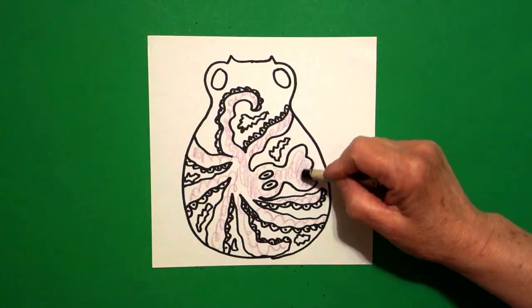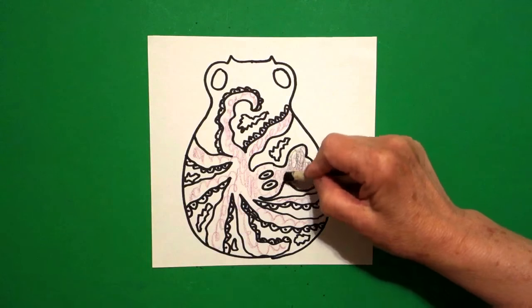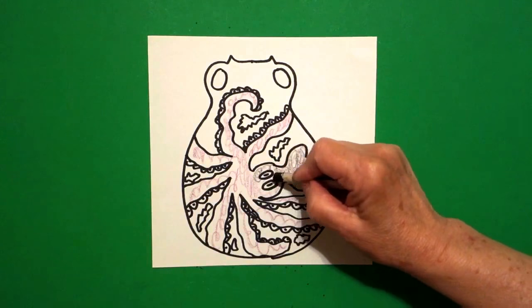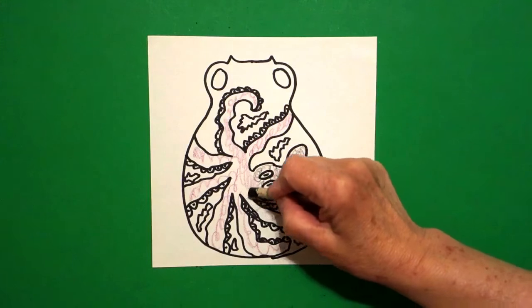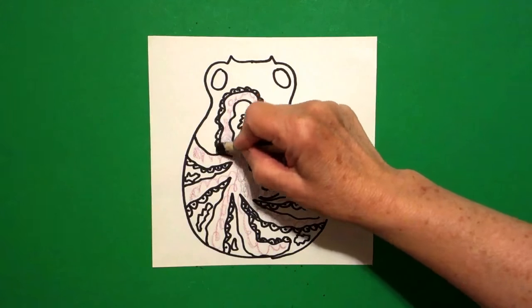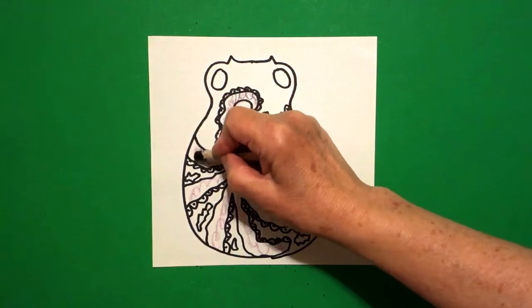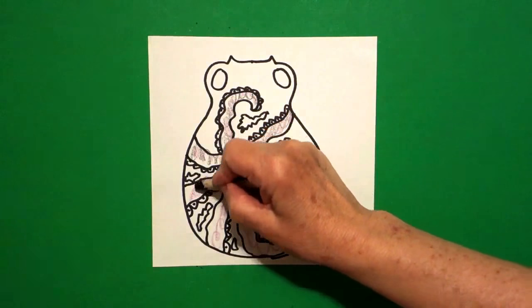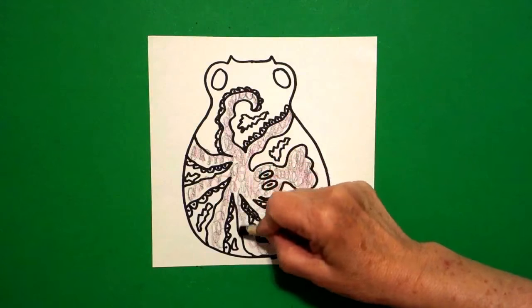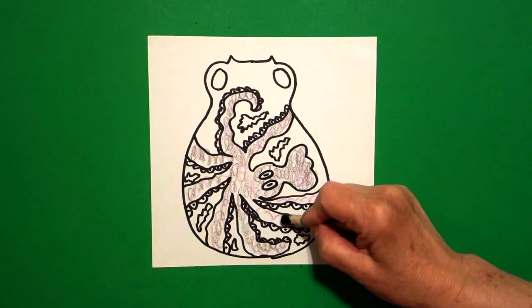Now don't go crazy with the black. You're just gonna lightly color over the red violet, but you don't want to color so dark you can't see the red violet. We want the red violet to show, but we also want it to be a little bit darker. So we're gonna use black and go over everything we just did red violet. And some of you go crazy and the next thing you know you've got a black octopus, which is okay, but we're kind of trying to go with a little more color.